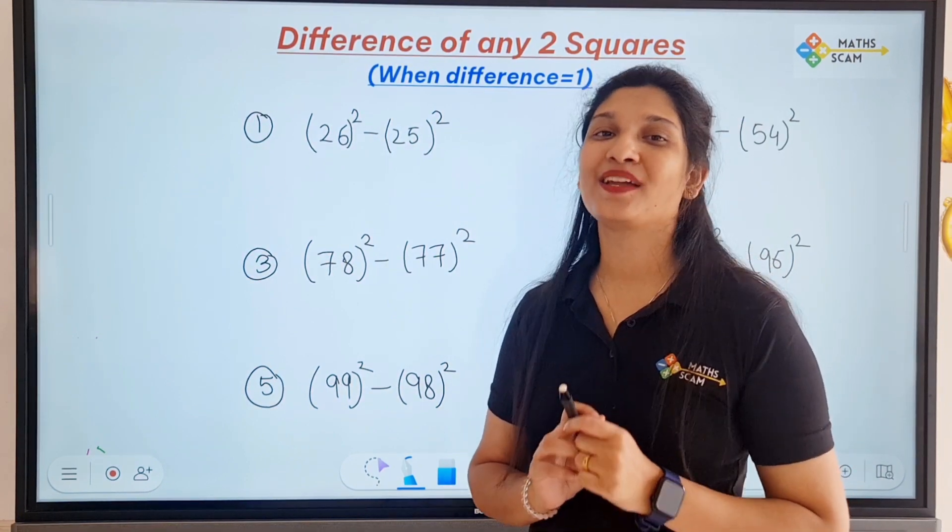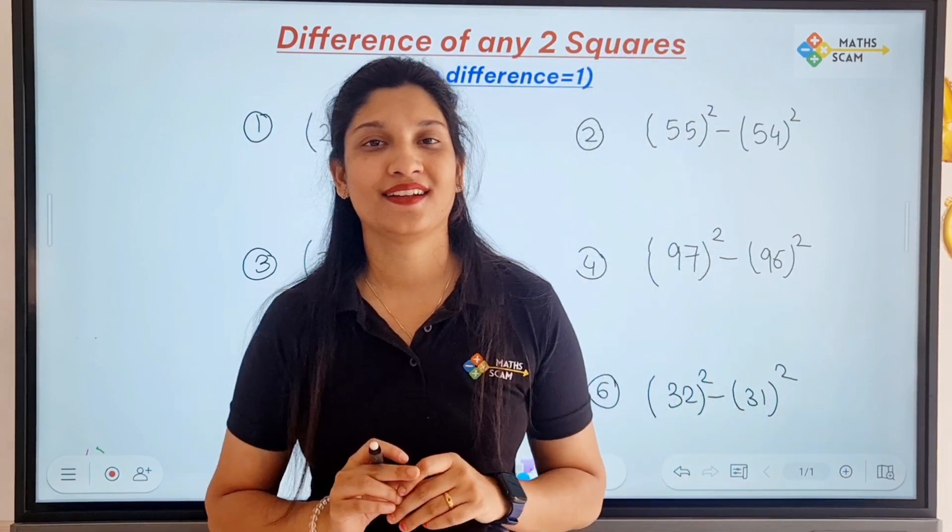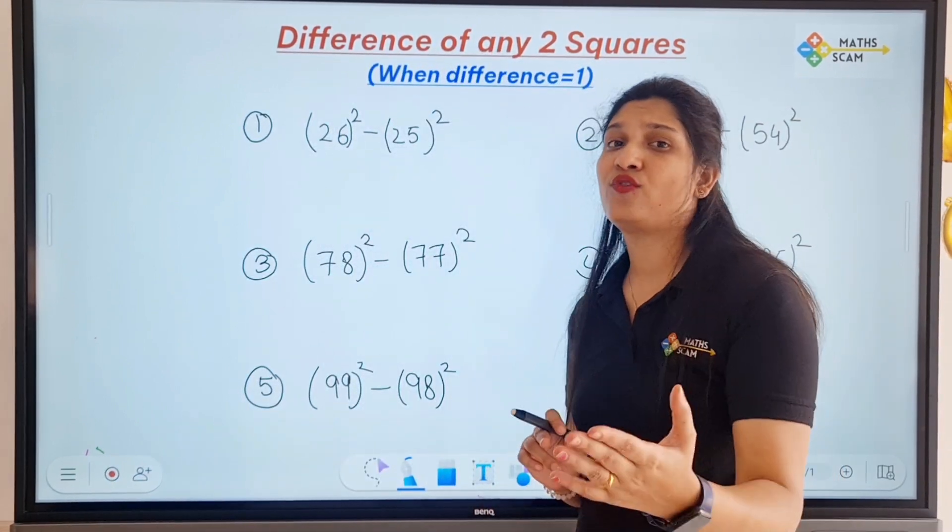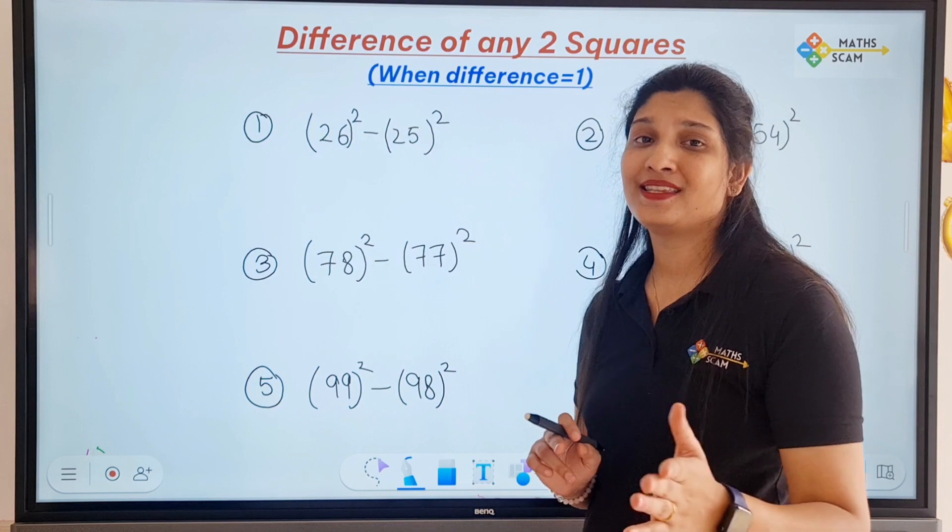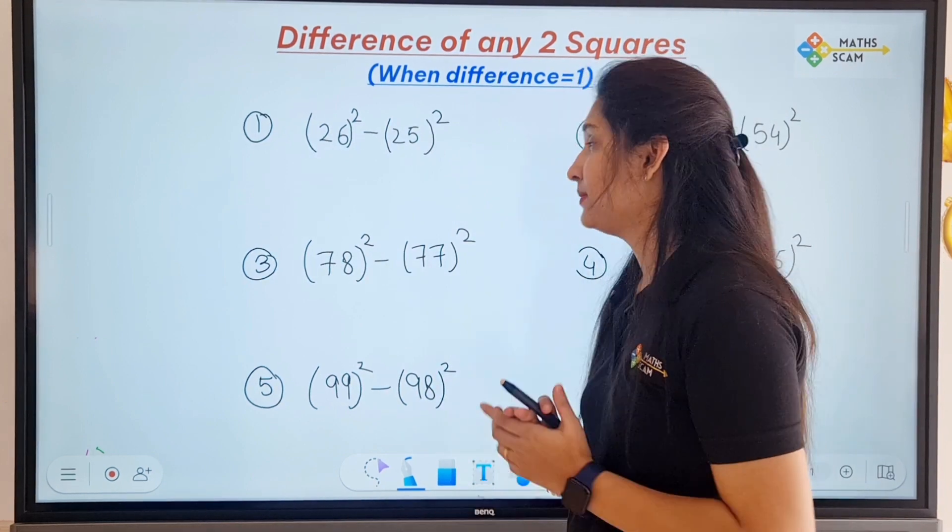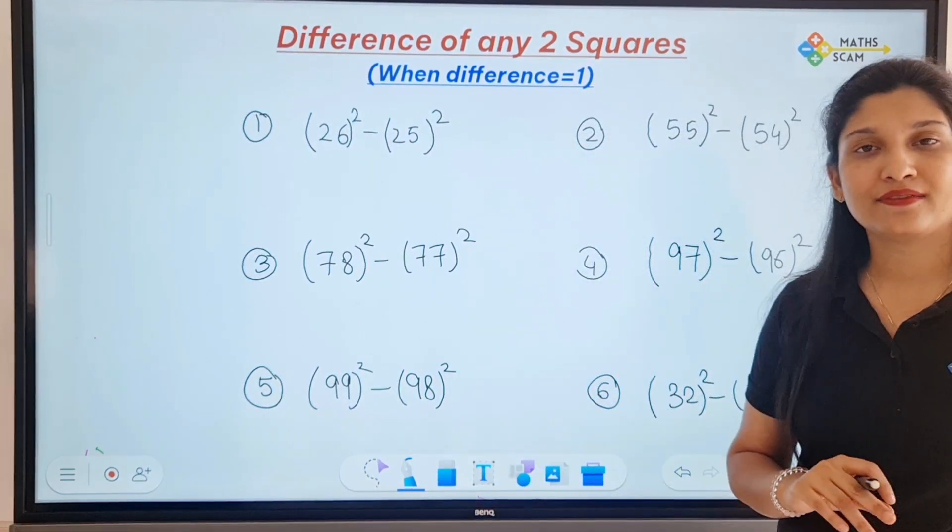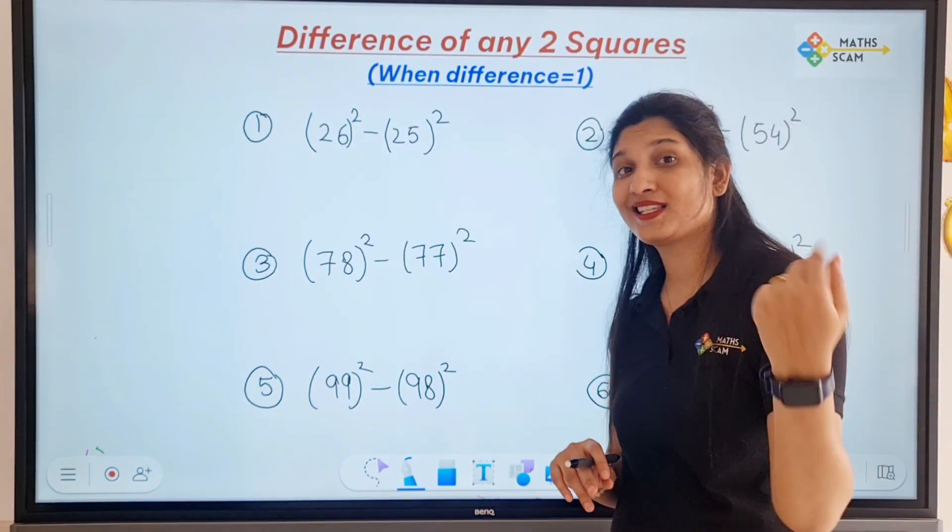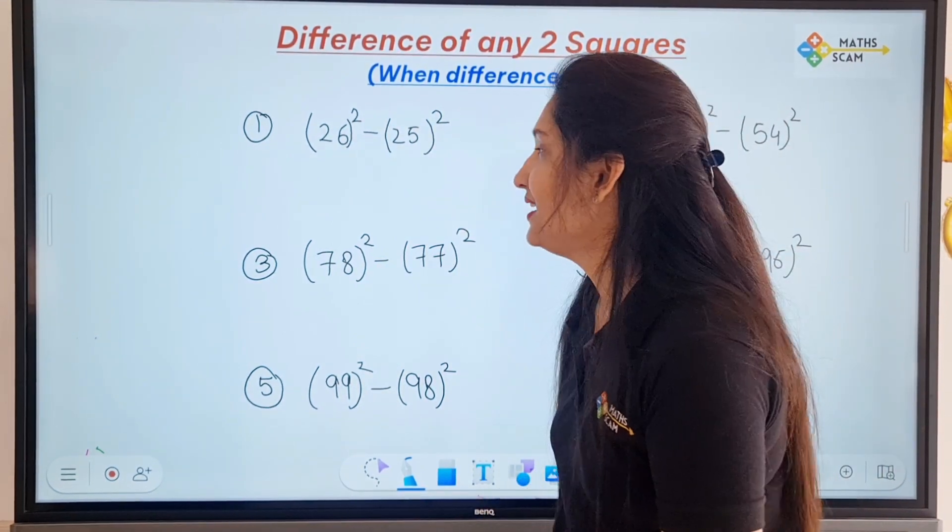How much time did it take? One minute? Some took 1 minute, some 40 seconds, some 50 seconds, some even 30 minutes, some 2 minutes. No problem. I am giving you a tip that will give you the answer in 2 seconds, just 2 seconds. That's my guarantee.